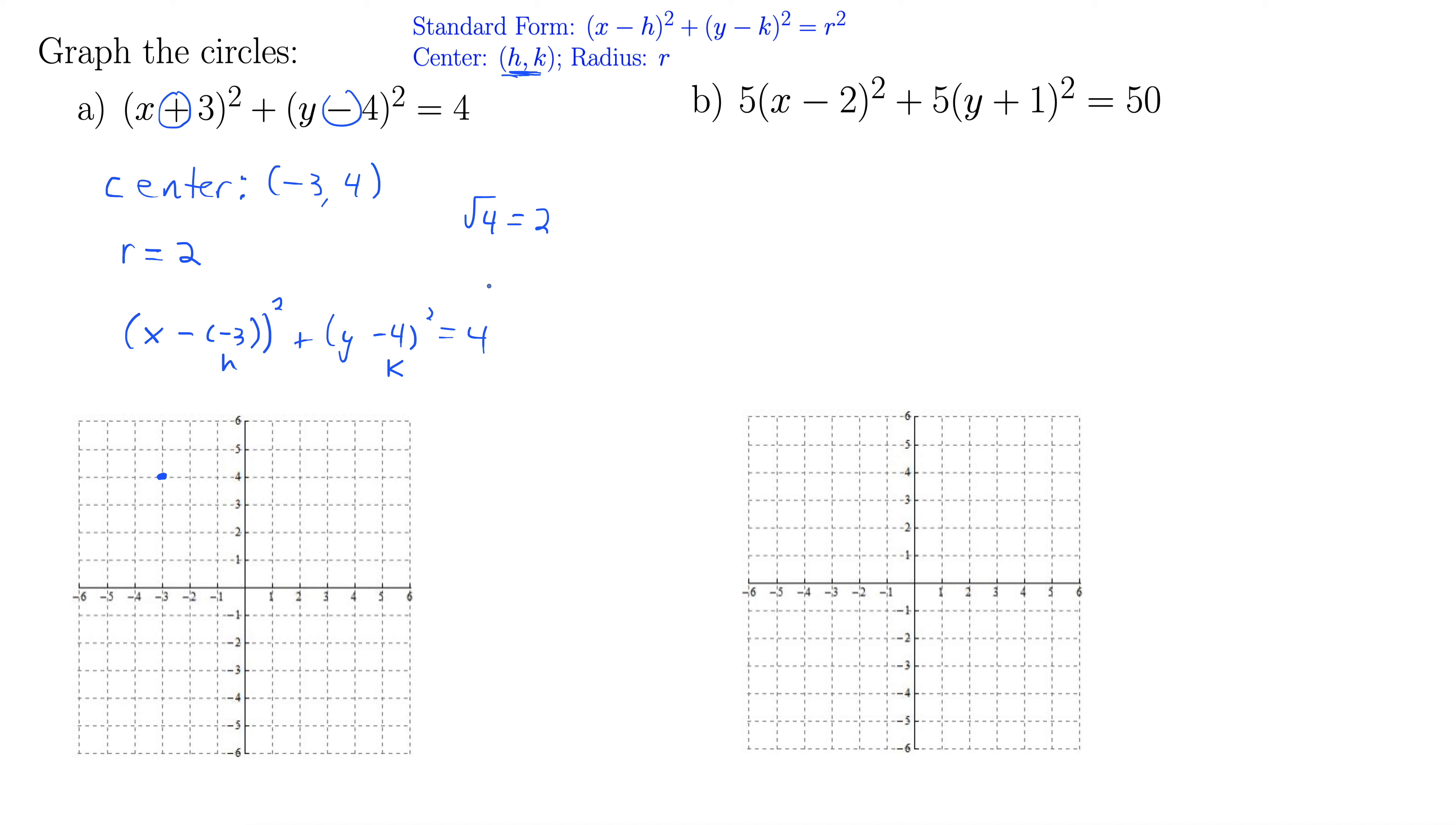And radius is 2. So I'm going to go to the right 2, up 2, 2 to the left, and 2 down. That gives me a nice outline of what my circle will look like. And then you just connect all the outer dots there to make a nice circle. We already know it's a circle, so there's no guessing on what the shape looks like in general.